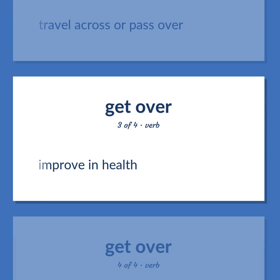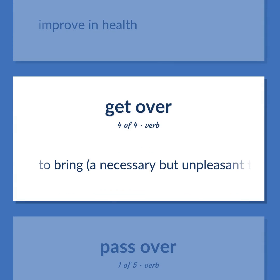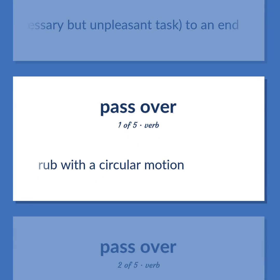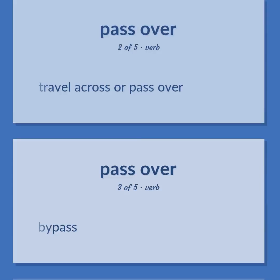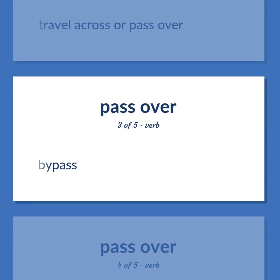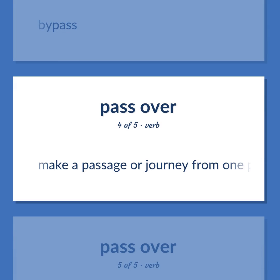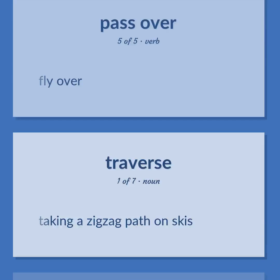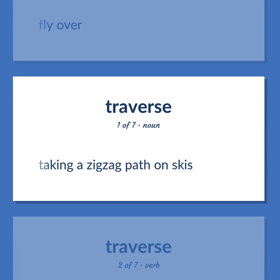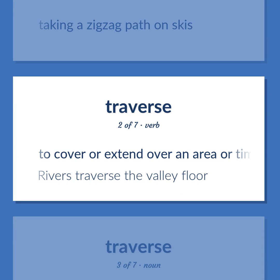Cross/related verbs: Improve in health. To bring a necessary but unpleasant task to an end. Rub with a circular motion. Travel across or pass over. Bypass. Make a passage or journey from one place to another. Fly over. Taking a zigzag path on skis. To cover or extend over an area or time period.